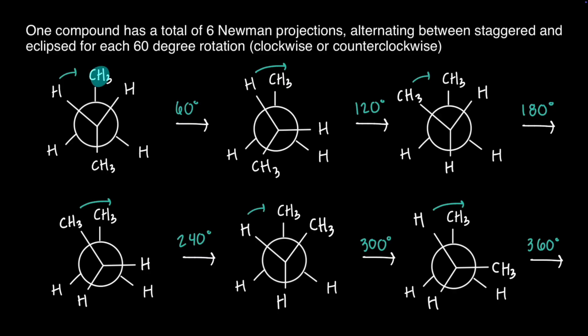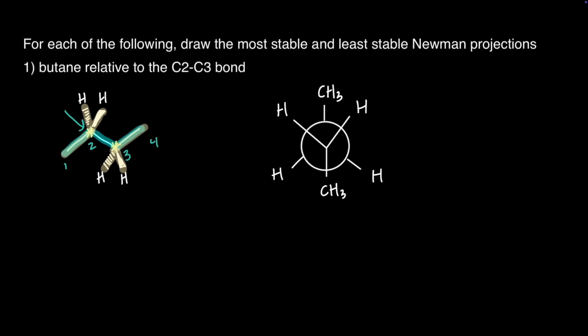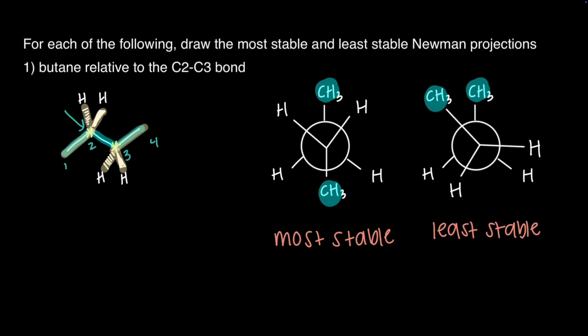For this Newman projection, we do not have many substituents on the front and back carbons that are larger groups besides hydrogen. Even though hydrogen can contribute to strain, it is the smallest element and it's going to be easiest to ignore hydrogen when looking at the most stable and least stable Newman projections. We focus on larger groups besides hydrogen to efficiently compare the gauche, anti, and eclipsed conformations. On the front carbon, the largest group is a methyl, and on the back carbon, the largest group is also a methyl. For the most stable Newman projection, the largest groups will be anti to each other in the staggered conformation. In our present Newman projection, the methyls are anti to each other, so this is the most stable. For the least stable Newman projection, the largest groups will be eclipsed to each other in an eclipsed conformation.